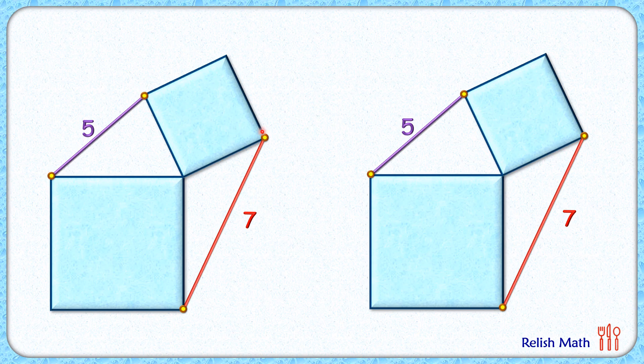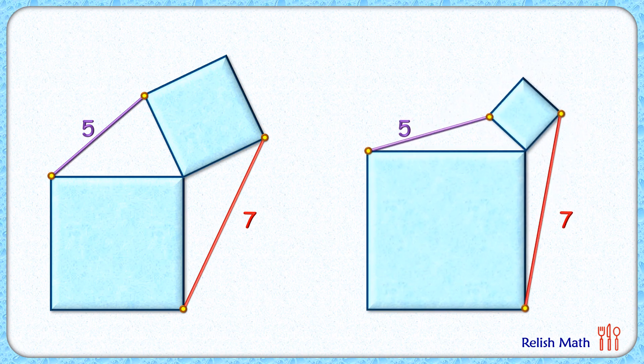So let's do one thing: keeping these lengths as 5 and 7, let's rotate this square slightly anticlockwise, and we can adjust the size so that this purple and red length remains as 5 and 7 centimeters. Now this particular figure still meets all the original conditions of the original figure.